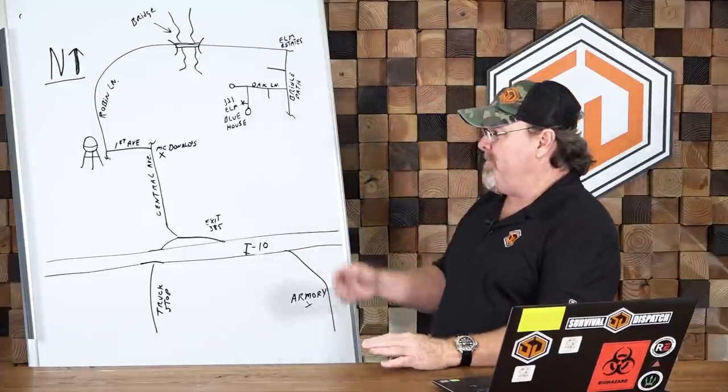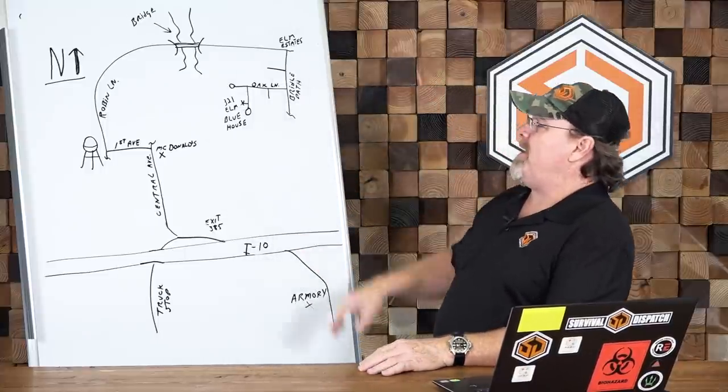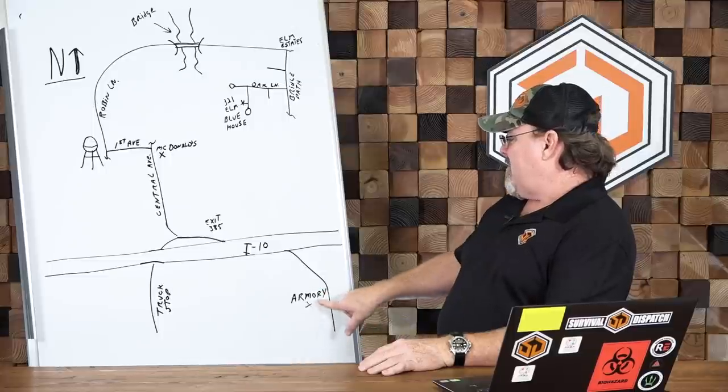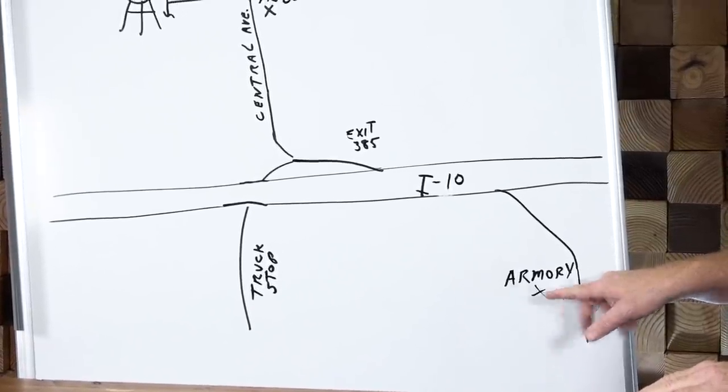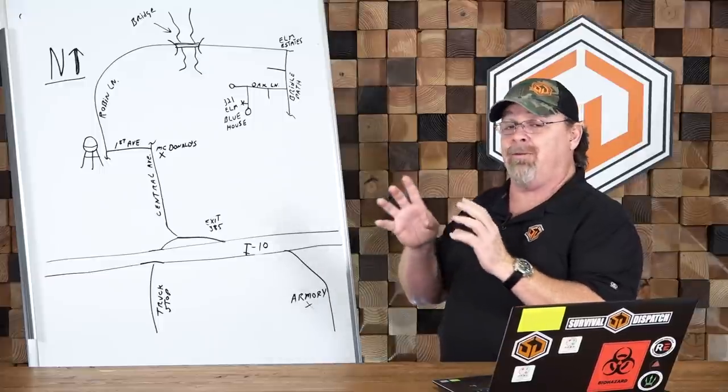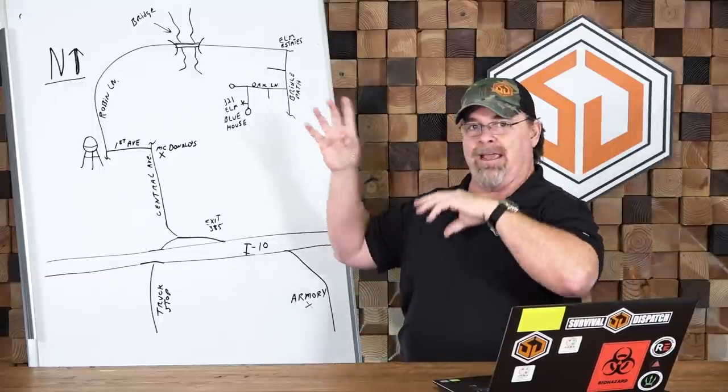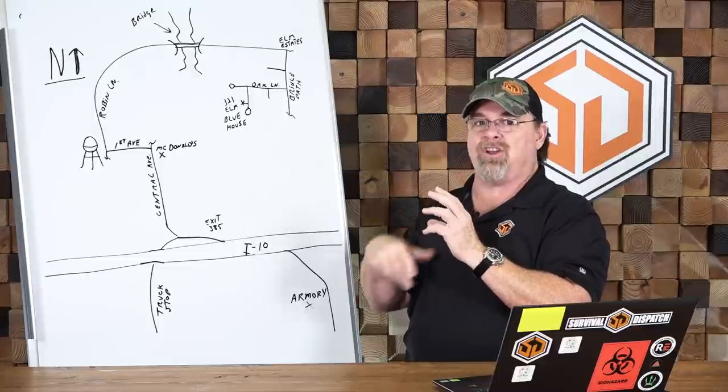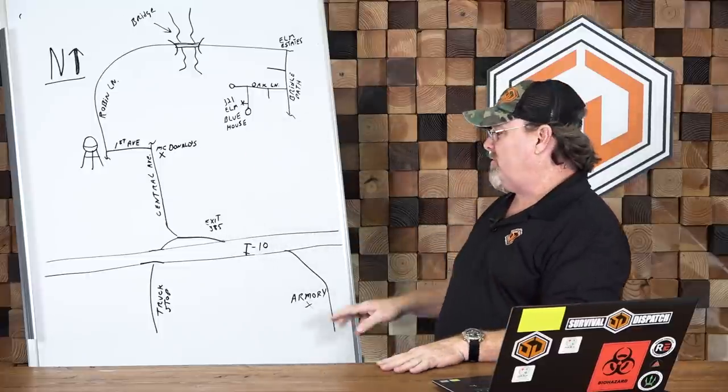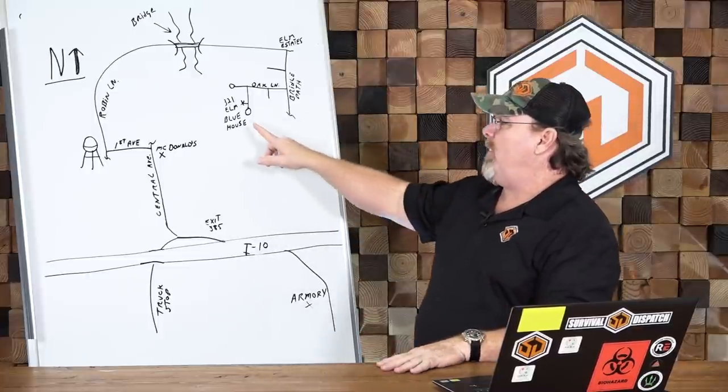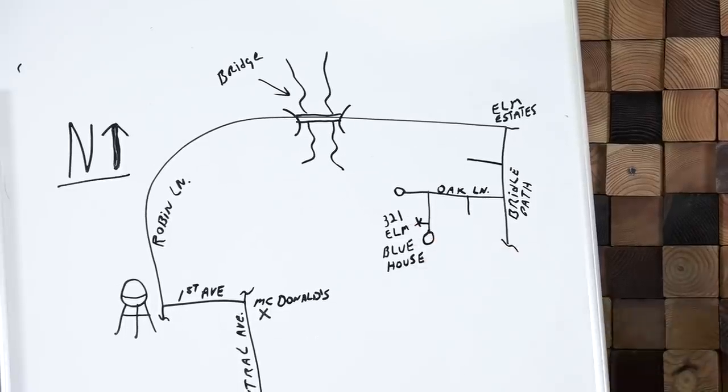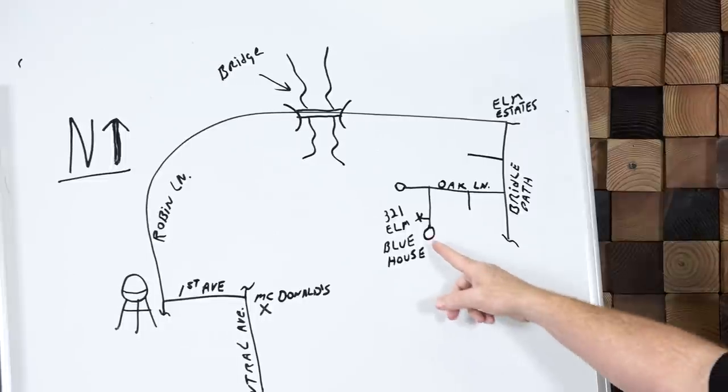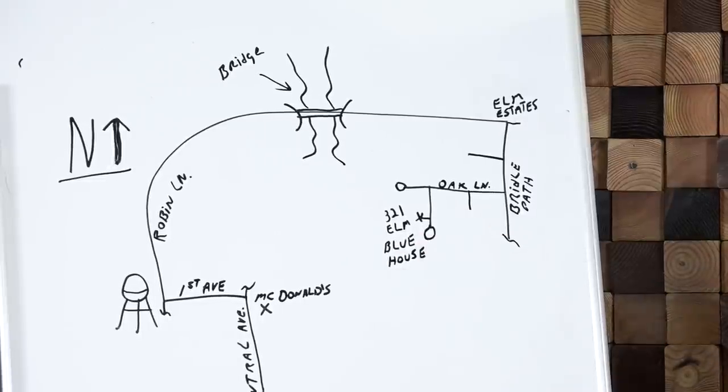It should have a known starting point. In this particular case what we've drawn out here is a starting point of an armory. Let's say we're going to start from the National Guard armory. You have to have a defined starting point. Your house, anywhere where you want to do your starting kickoff on this journey, and you need a well-defined ending point. Our defined ending point here is 321 Elm Lane and it's a blue house. We're going to indicate what the house looks like.